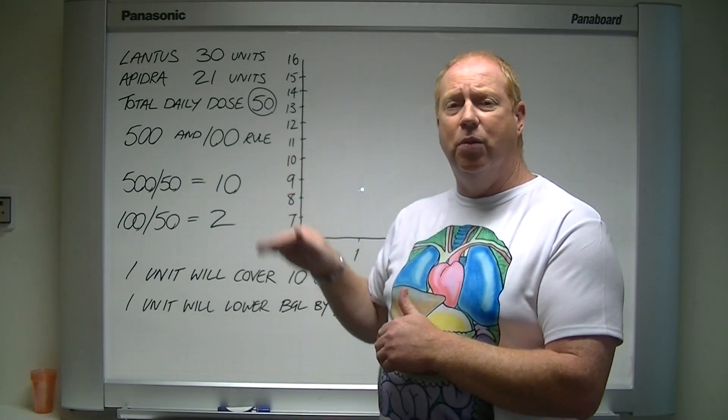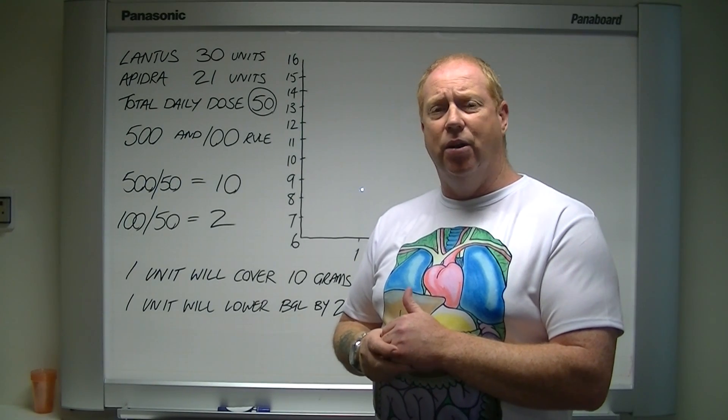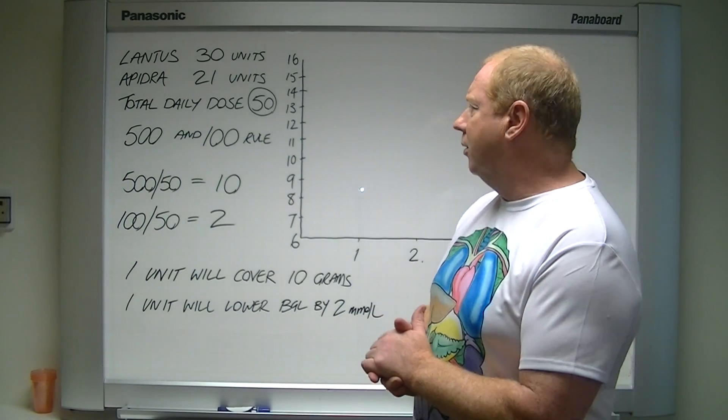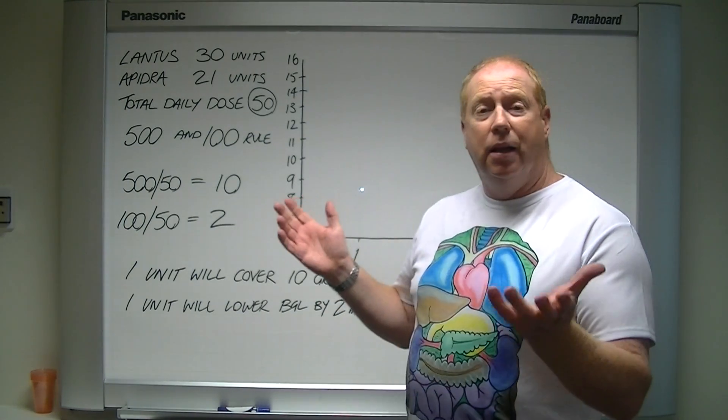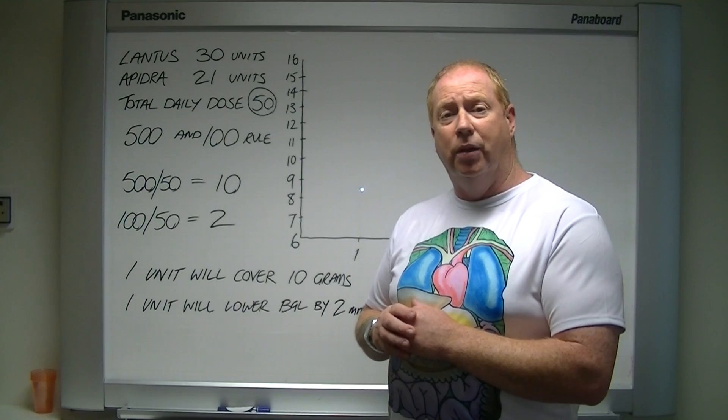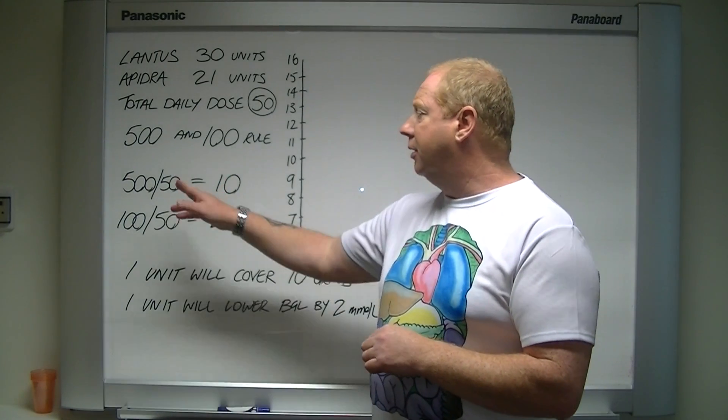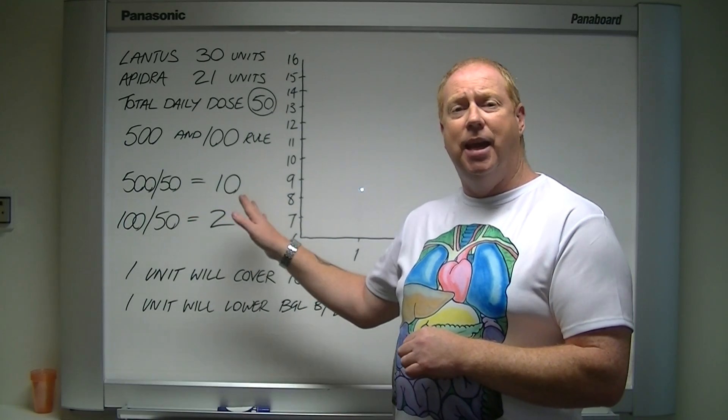So what I've done is I've rounded it down to 50 units, that's my total daily dose of insulin, TDD often referred to in the industry, total daily dose of insulin. Then I used the 500-100 rule, so now I have my total daily dose of insulin, 500 divided by my total daily dose is 10.